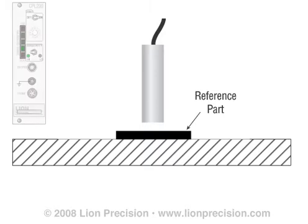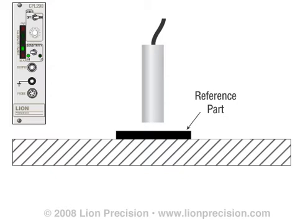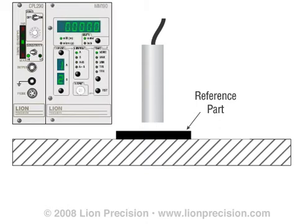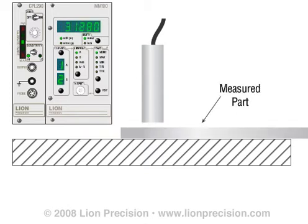To perform a single-channel thickness measurement, first place a conductive part of known thickness on the reference surface. Then adjust the sensor to measure the top surface of the part. The sensor should be positioned near the center of its measurement range to allow for positive and negative deviations from the reference measurement. Adjust the sensor output for zero volts, or a displayed reading of zero if a measurement display is being used. Then replace the reference part with a part to be measured and read the deviation and thickness from the display, or calculate the deviation from the output voltage.